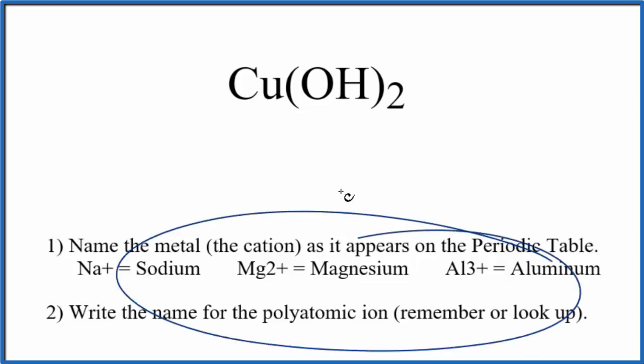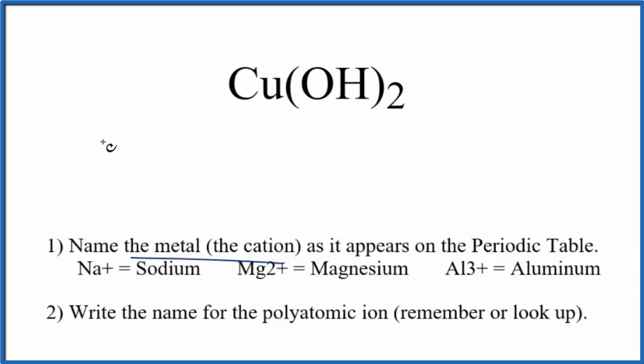So we're going to use these rules here to write the name for Cu(OH)₂. First, we write the name of the metal, that's the Cu. Next, we're going to write the name of the polyatomic ion, which is this OH here, so we just write hydroxide.